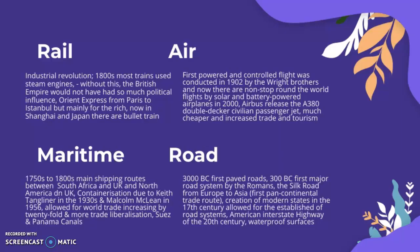Looking at different transport types: railways developed largely in the Industrial Revolution because of steam engines, and without this the British Empire would not have had so much political influence. There was also the Orient Express from Paris to Istanbul, mainly for the rich. Now in Shanghai and Japan there are bullet trains at much lower cost, so railways are no longer only for the wealthy.